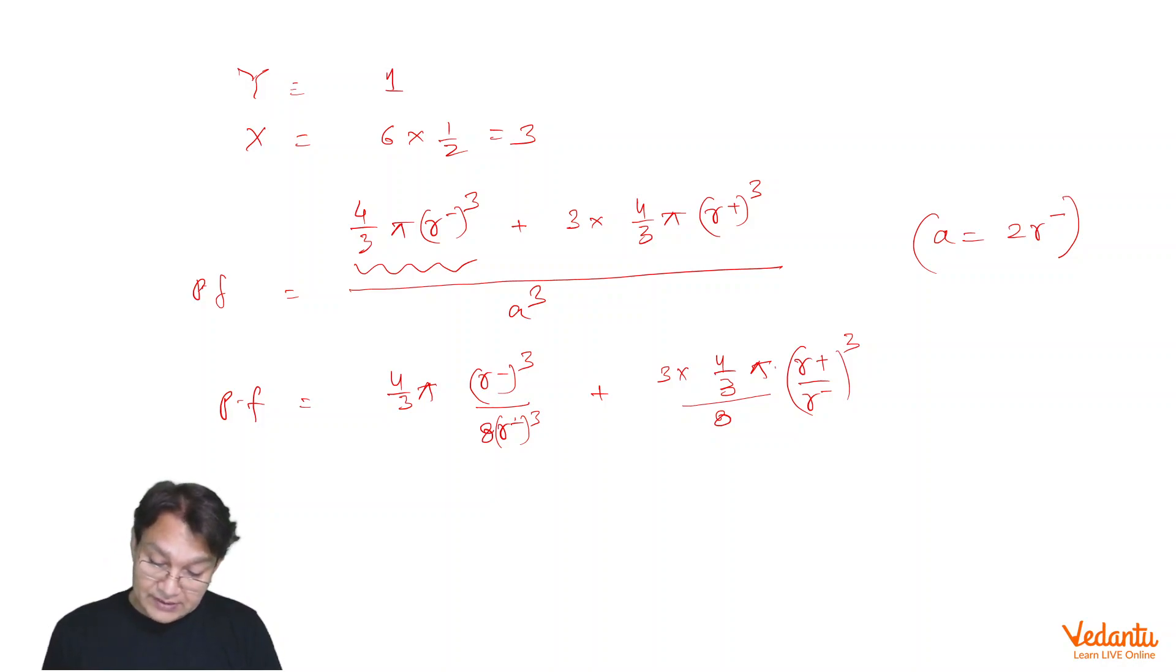So simplifying this, this quantity is simply pi by 6 which corresponds to 0.52, and this quantity should now be calculated and this is pi by 2 into 0.414 whole cubed.